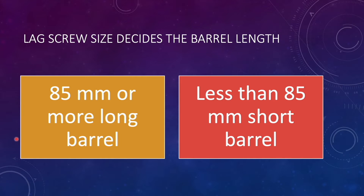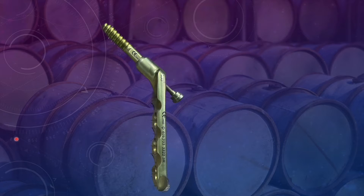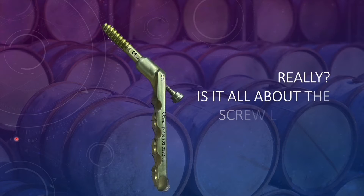What we already know is that for a lag screw with size 85 millimeter or more, we use the long barrel, while for screws less than 85 millimeter, we use the short barrel. However, the reason is not frequently discussed, so we'll be seeing why this happens and whether it is the only criteria for deciding the size of barrel.